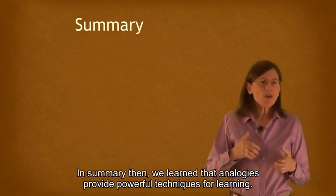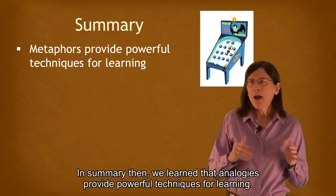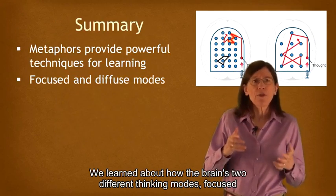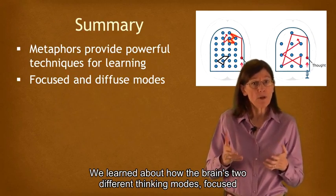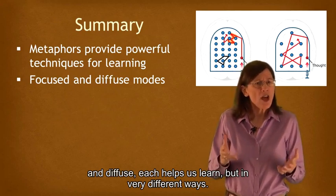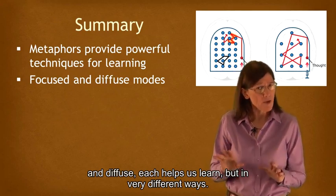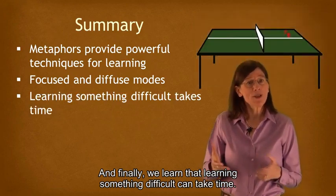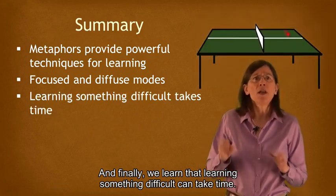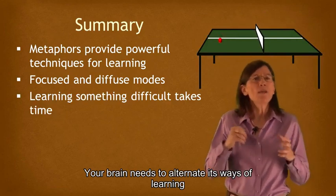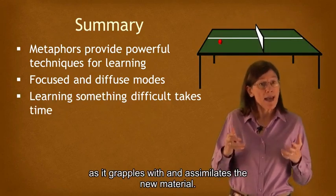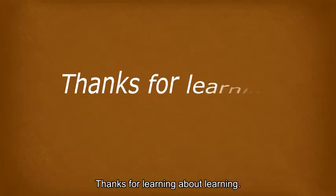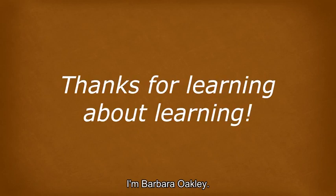In summary, we learned that analogies provide powerful techniques for learning. We learned about how the brain's two different thinking modes — focused and diffuse — each helps us learn, but in very different ways. And finally, we learned that learning something difficult can take time. Your brain needs to alternate its ways of learning as it grapples with and assimilates the new material. Thanks for learning about learning. I'm Barbara Oakley.